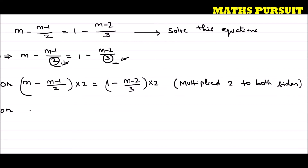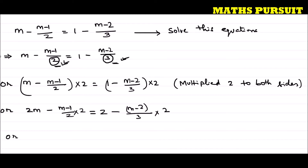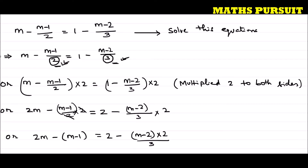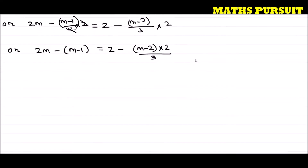So m into 2 is 2m. We get 2m minus (m minus 1) upon 2 into 2, is equal to 2 minus (m minus 2) upon 3 into 2. I used a bracket so that it is easy to solve. The 2s cancel out and we are left with 2m minus (m minus 1) is equal to 2 minus 2(m minus 2) divided by 3. Initially I multiplied 2 to remove the 2 from the denominator. Now I will multiply 3.